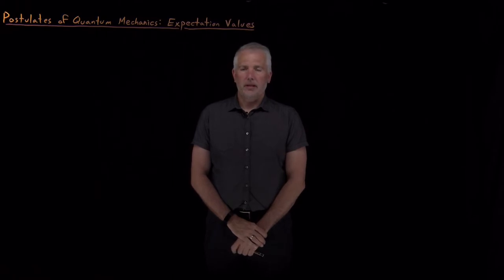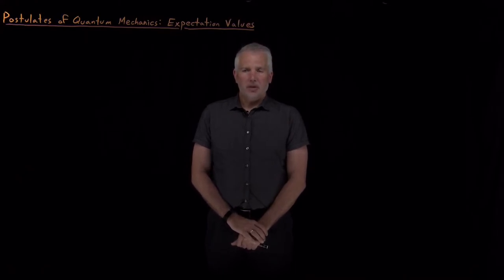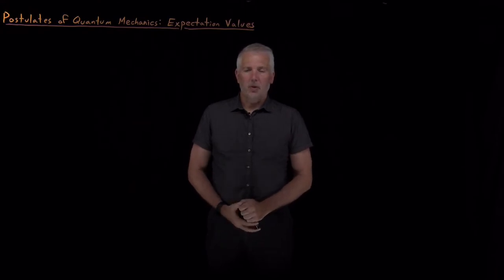The third postulate of quantum mechanics told us that the allowed values of any observable property are the eigenvalues of the operator associated with that property. That doesn't quite answer the question of what value we're actually going to see when we make a measurement. That question is a little bit difficult to answer because quantum mechanics is inherently probabilistic — it's not deterministic.